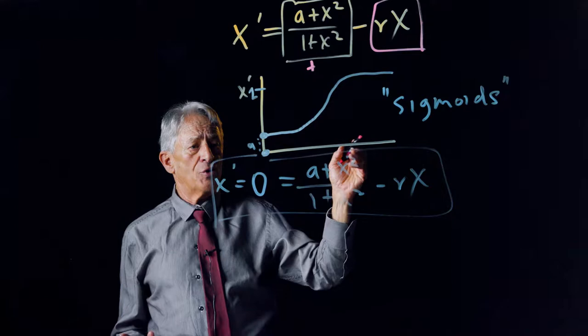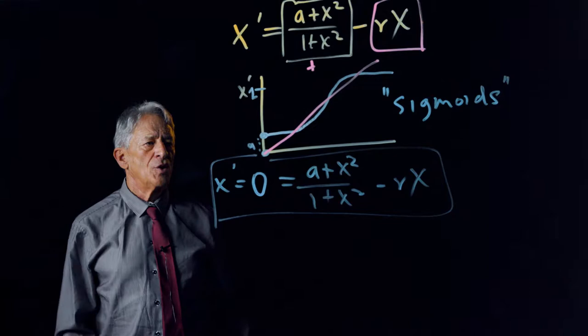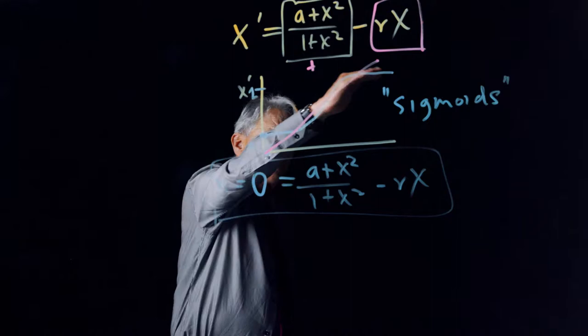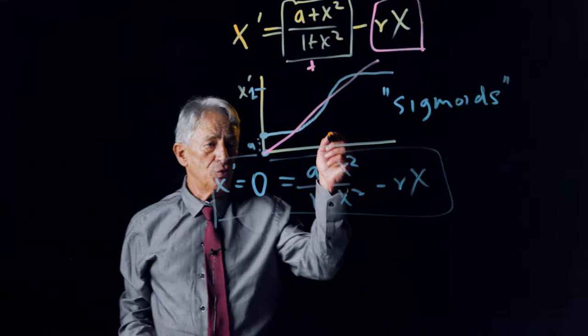the equation of a straight line. So there is the straight line, which is the negative term. Here is the blue sigmoid, which is the positive term.